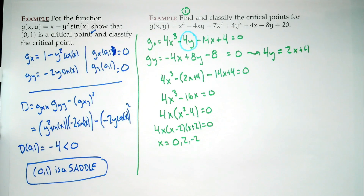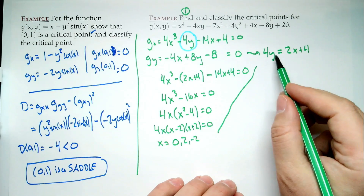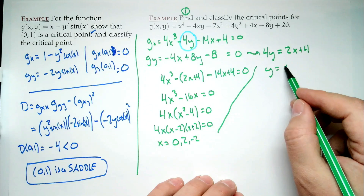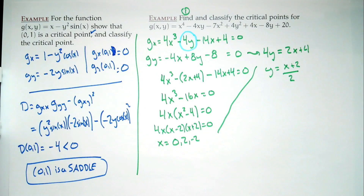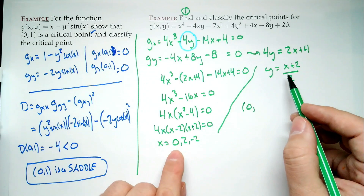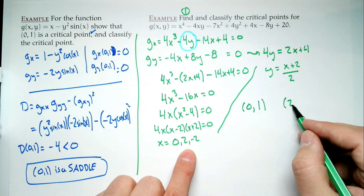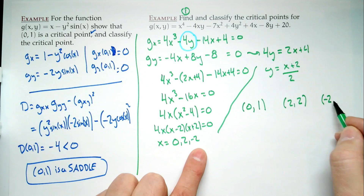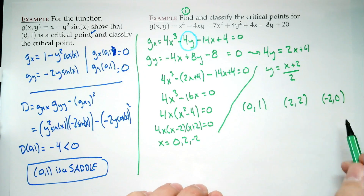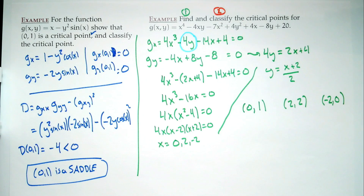Using y = (x+2)/2: when x = 0, y = 1; when x = 2, y = 2; when x = -2, y = 0. So we have three critical points: (0,1), (2,2), and (-2,0). We're done with the find. Now classify.